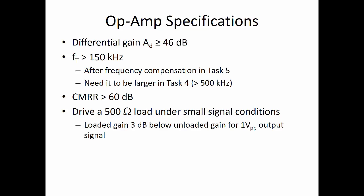That is, the loaded gain should drop about 3 decibels below the unloaded gain for a 1 volt peak-to-peak output signal when you have a 500 ohm connected to it. Ideally, that load should be smaller. You're expected to have an infinite input resistance in your operational amplifier.